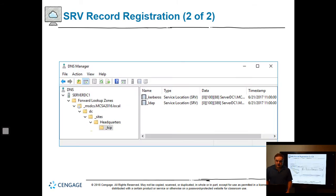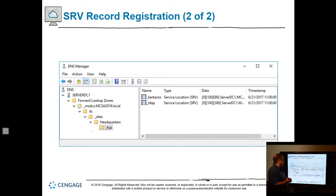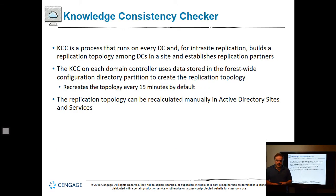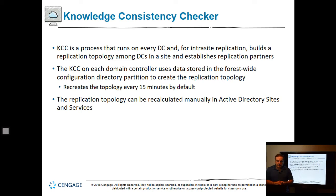Here we see the DNS Manager and an example of SRV records, which point to where the domain controller is and allow certain protocols. You've got Kerberos for authentication using a ticket, and LDAP, which uses TCP port 389 to query whether a user exists. The Knowledge Consistency Checker runs on every DC for replication, using data stored in the forest-wide configuration directory partition, and recreates replication topology information every 15 minutes by default, though you can change that.